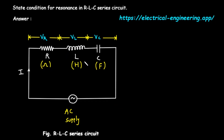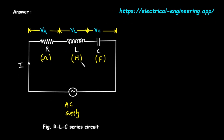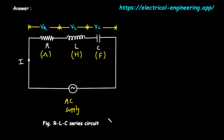Let's begin by looking at the circuit itself. On the screen, you see a diagram labeled FIG RLC series circuit. This is a series circuit, which simply means that all the components are connected one after another in a single loop. The current, which is the flow of electricity, has only one path to follow, so it passes through each component in turn.